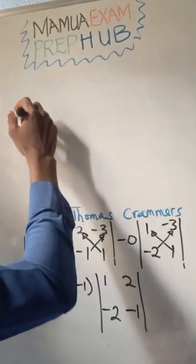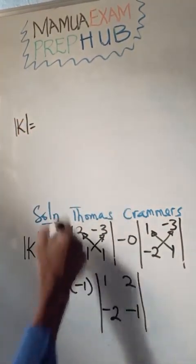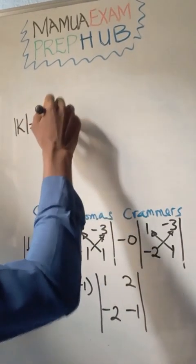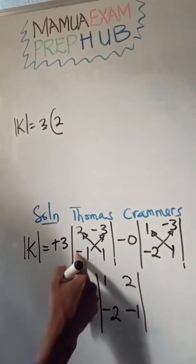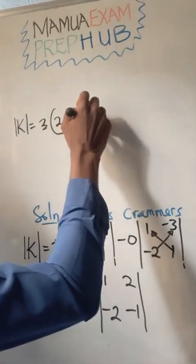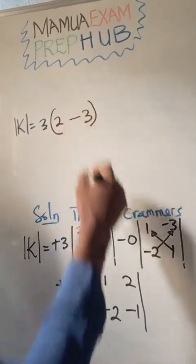So I have the determinant K. This is plus 3, which is 3. 1 times 2 is 2, minus 1 times minus 3 is 3. So I've multiplied diagonally, now I'll subtract.